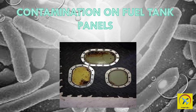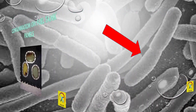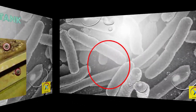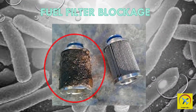Water can enter an aircraft fuel system through leaks in the vents, seals, or poorly fitting fuel caps on filler openings, during rain or snow storms, or when the aircraft is washed, from refueling system equipment, by condensation and precipitation, especially when an aircraft has partially filled tanks, and when refueling during rain or snow storms.